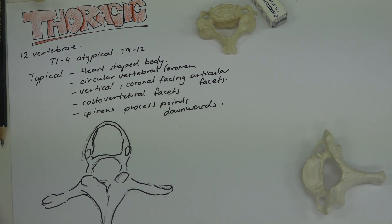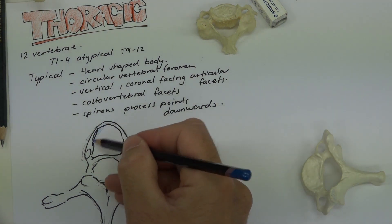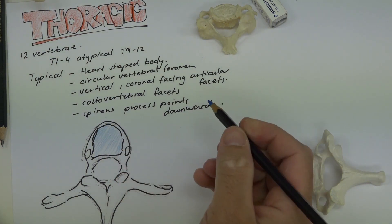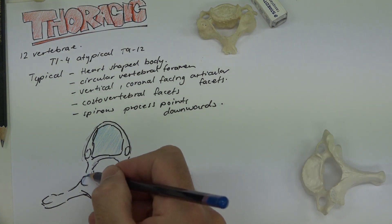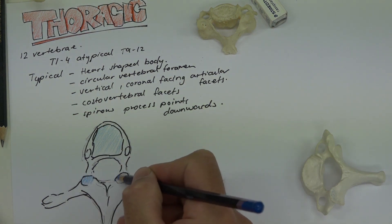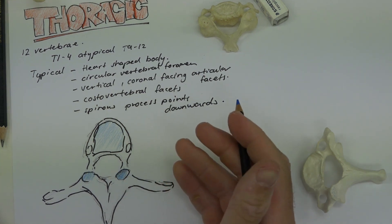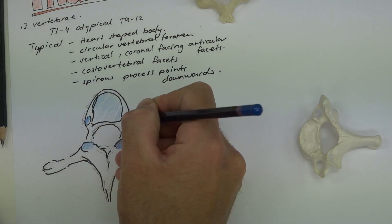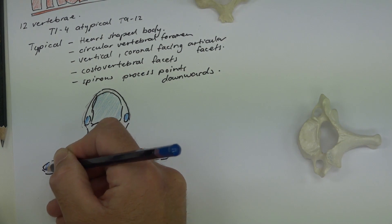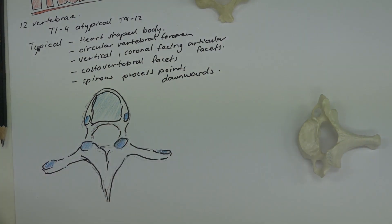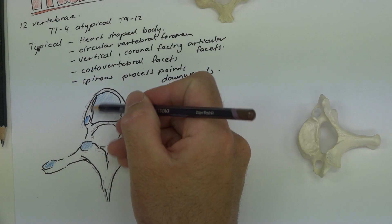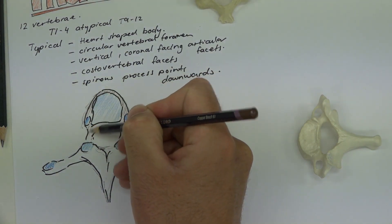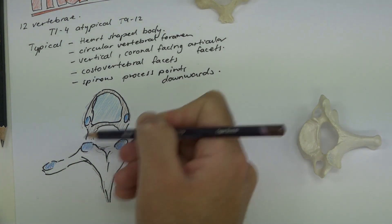The blue area on the vertebral body is a fibrocartilaginous or secondary cartilaginous type joint. The articular facets — the superior articular facets — are for the Z-joints or plain synovial type joints. Then the costovertebral articulations on the body and transverse process are there for articulation with the ribs.